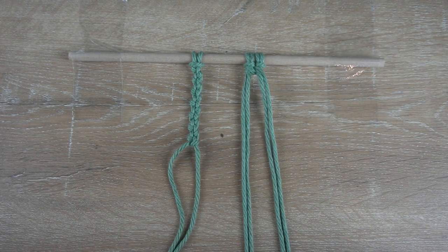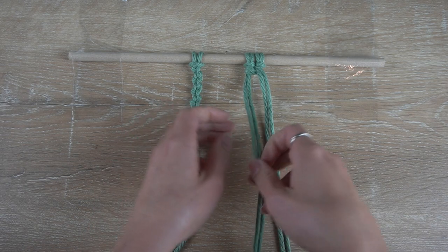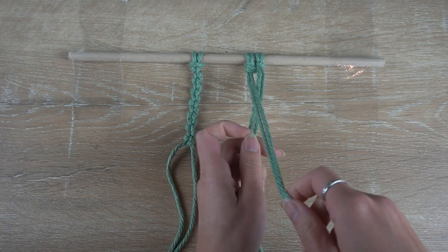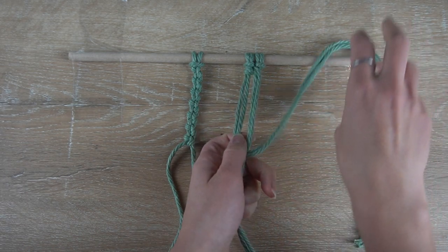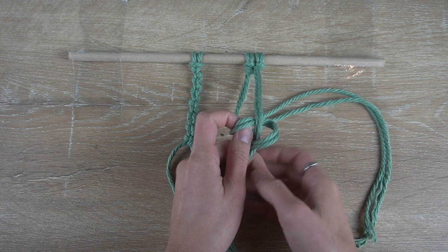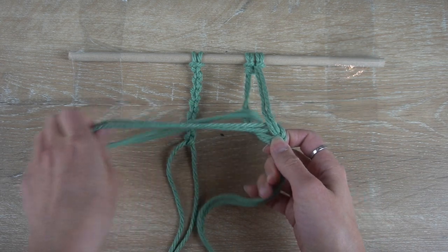So similar to the first one, we're going to take the right two cords and make a half hitch knot onto the left two cords. Then we're going to alternate with the left two cords with a half hitch knot on the right two cords.